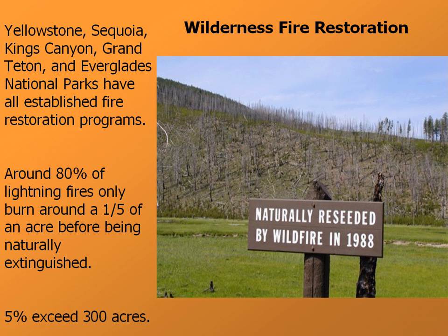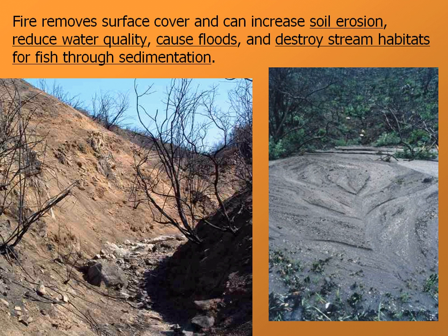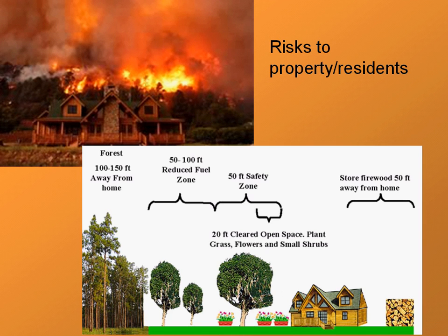Some of the harmful aspects of fire: fire can remove the surface cover and make areas more susceptible to erosion and can destroy stream habitats. If all the cover is removed and a lot of sediment ends up in streams as a result, forest fires have been known to seriously reduce fish populations through sedimentation. Another major concern is that as property values have increased in the U.S., properties tend to be placed in areas prone to forest fires, presenting significant risk as well.